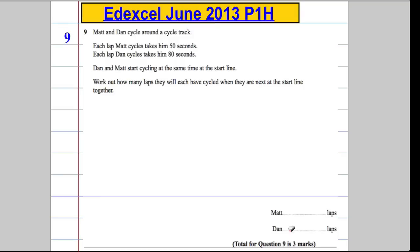Question 9 is a fairly typical question for GCSE Maths. We're told that Matt and Dan cycle around a cycle track. Each lap that Matt cycles takes him 50 seconds, and for Dan it's going to take 80 seconds. Dan and Matt start cycling at the same time at the start line. After how many laps will they each have cycled when they are next at the start line together?